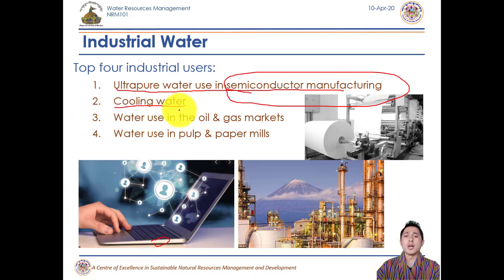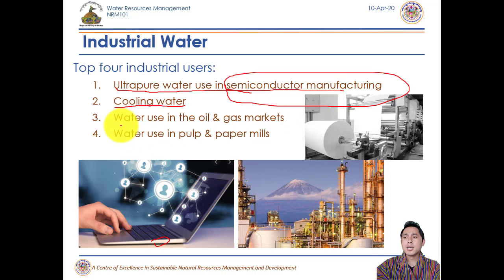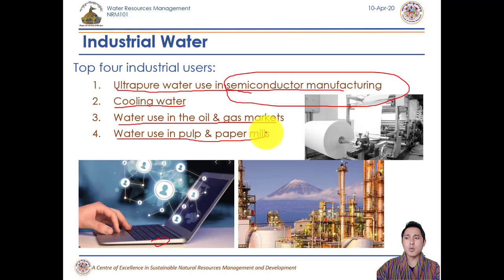Second is cooling water, used to cool machines and large operating systems like hydropower turbines and industrial machinery — without cooling they would overheat and fail. Third is water use in oil and gas markets, as explained with petroleum refinery processes. Fourth is water use in pulp and paper mills, where water is a pivotal asset to produce paper in these industries.